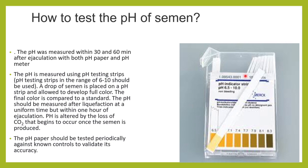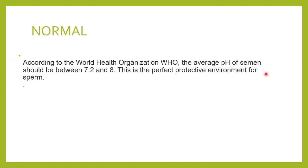pH is tested with the help of a pH indicator or a pH meter. The pH testing strips usually have a range of around 6 to 10. A drop of semen is placed on the pH strip, allowed to develop full color, and then compared with the standard. The pH paper should also be tested periodically against a control to ensure accuracy.